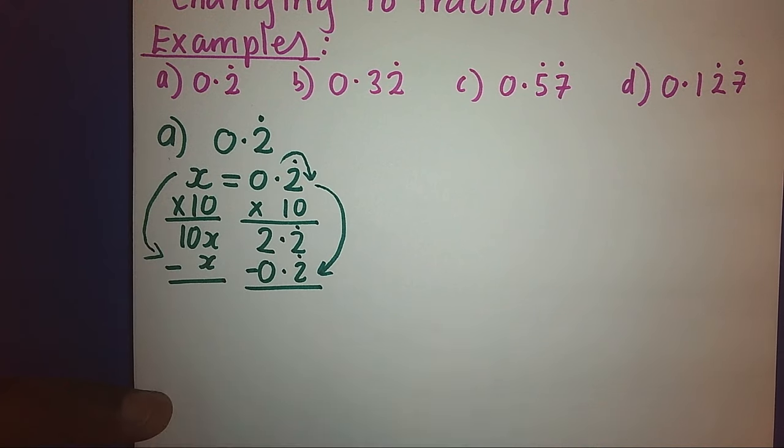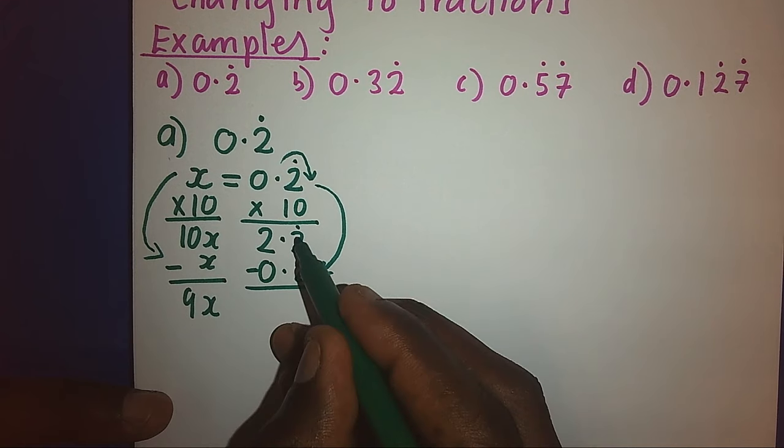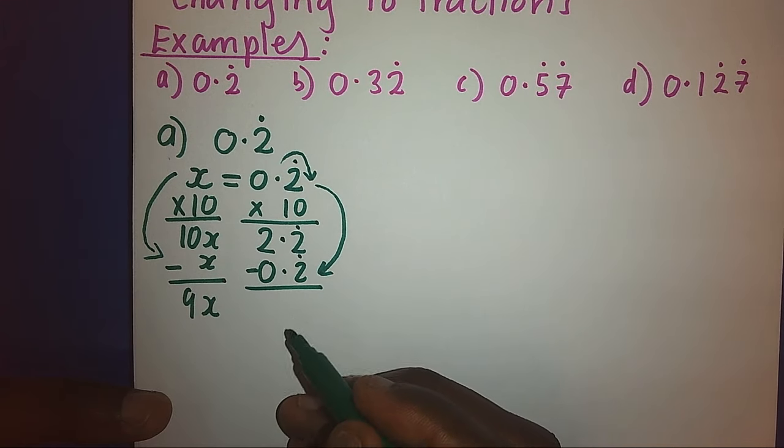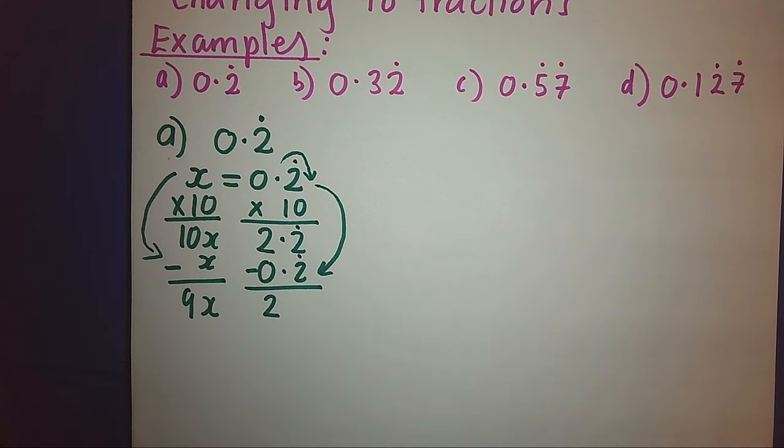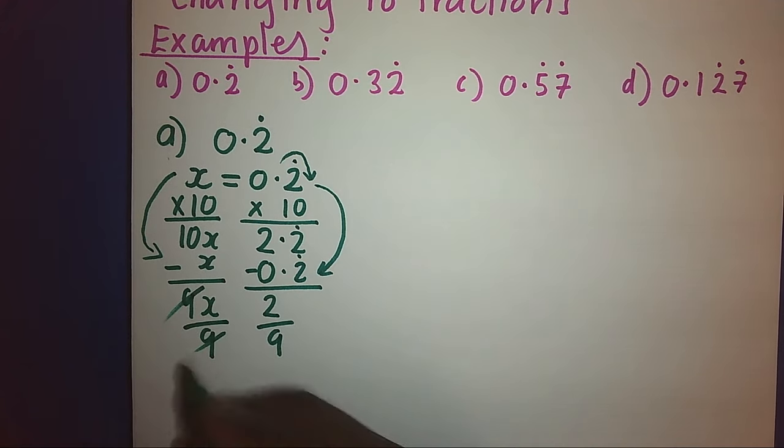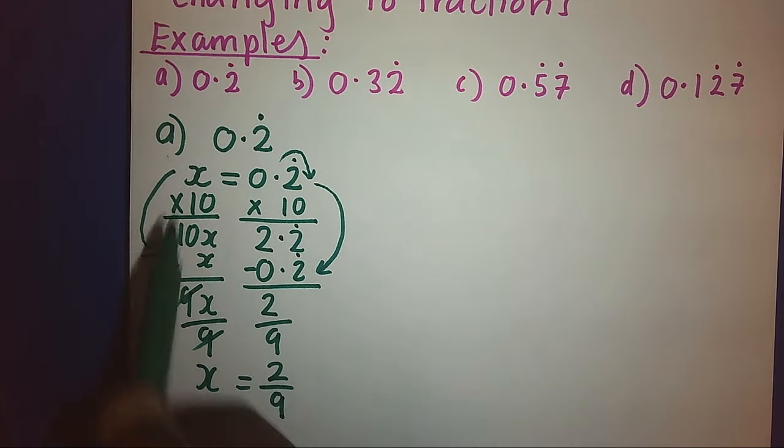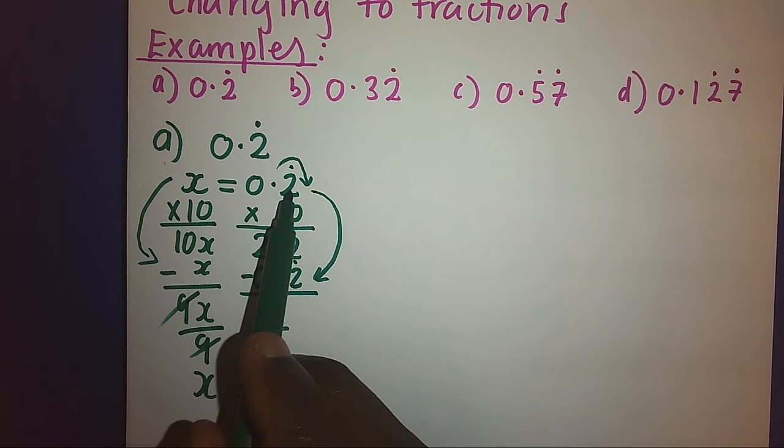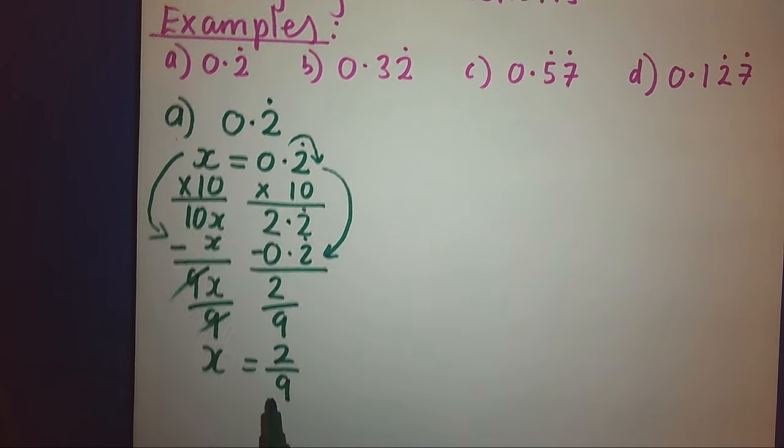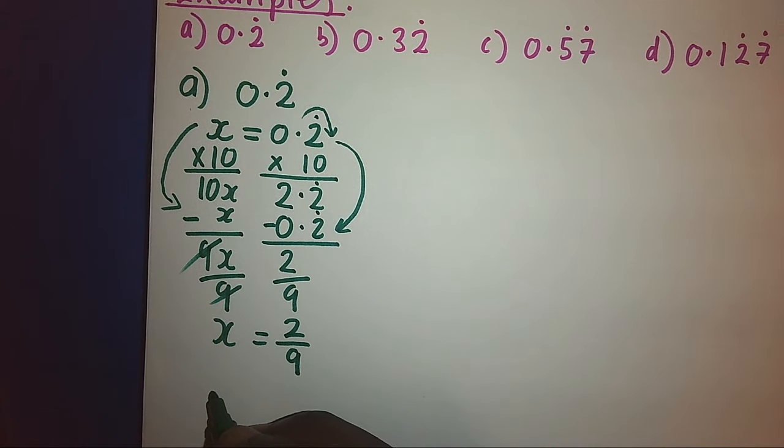So 10x minus x we get 9x. 2 recurring, 2 recurring we get 0, and 2 minus 0 is 2. So we shall divide both sides by 9. Hence, our x will be 2 over 9. At the beginning we said let x represent 0.2, and now we have got x is equal to 2 over 9. This means our recurring has become a fraction of 2 over 9.